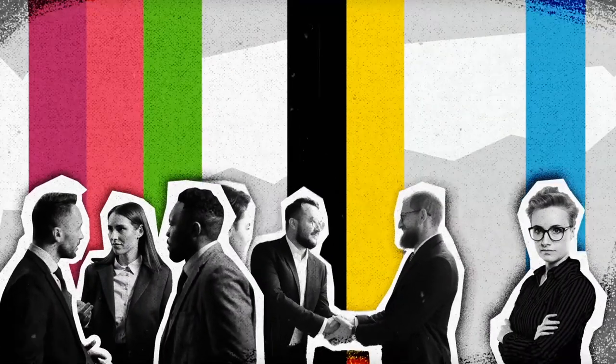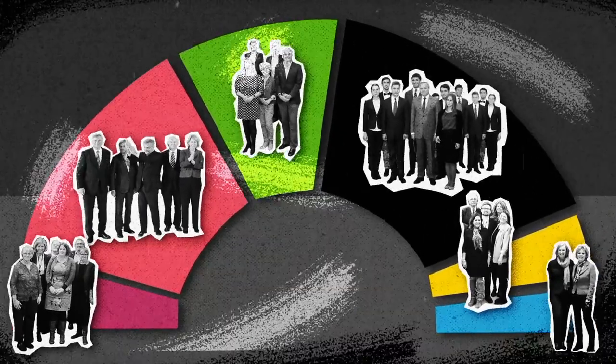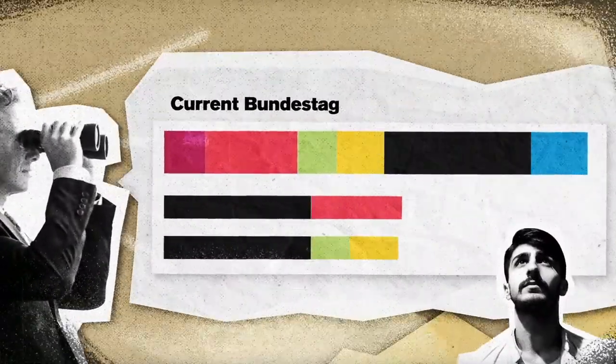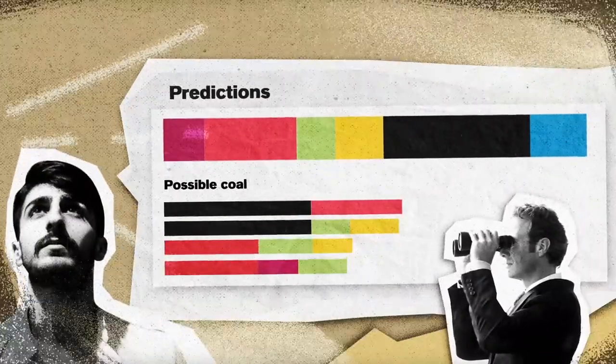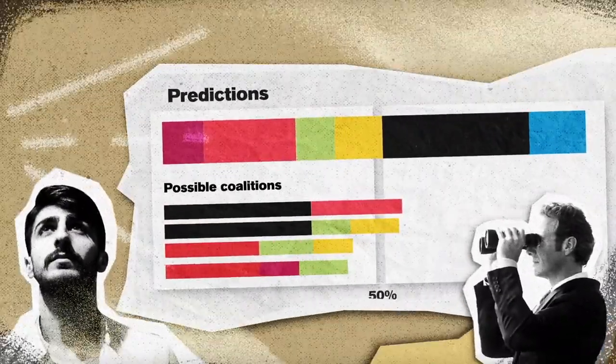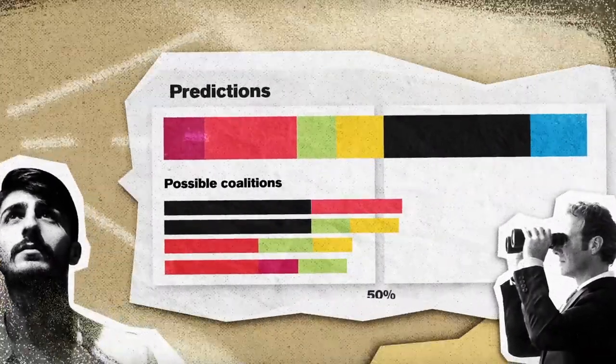For a start, Germany's electoral system is based on proportional representation, which alone creates a system that is geared towards compromise. After the dust from the election settles, the parties survey the landscape and do some good old-fashioned math: which two or three parties need to come together to control over 50% of the 598 seats in the Bundestag?